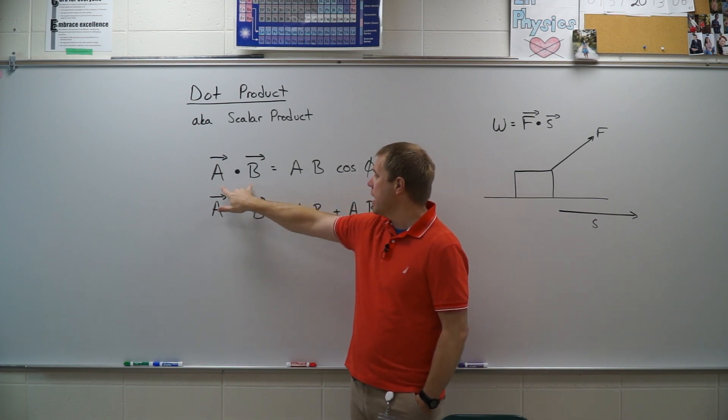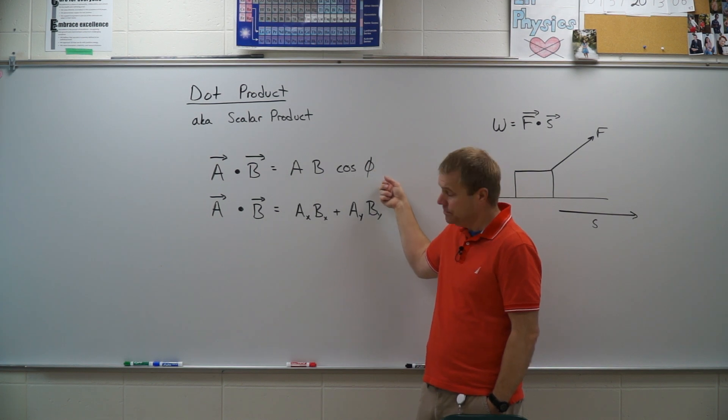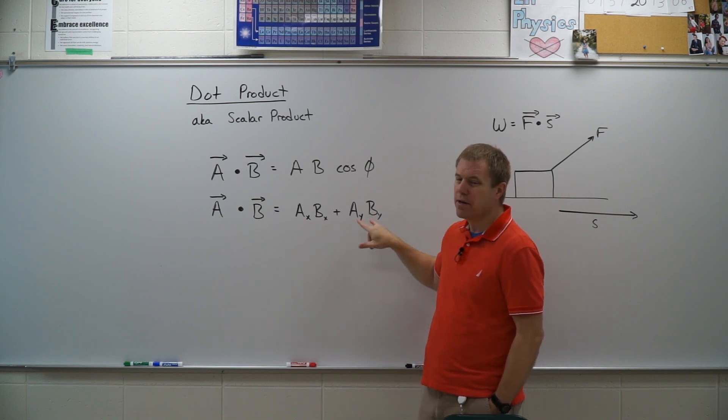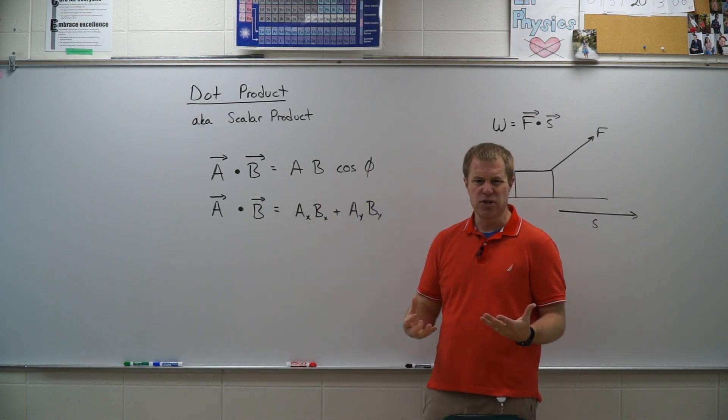So the two ways we can do a dot product is we can multiply the magnitudes times the cosine of the angle between them, or we can go ahead and find the components in the x direction, multiply those together, or the components in the y direction. So why would we want to do this scalar product and what does it really do?